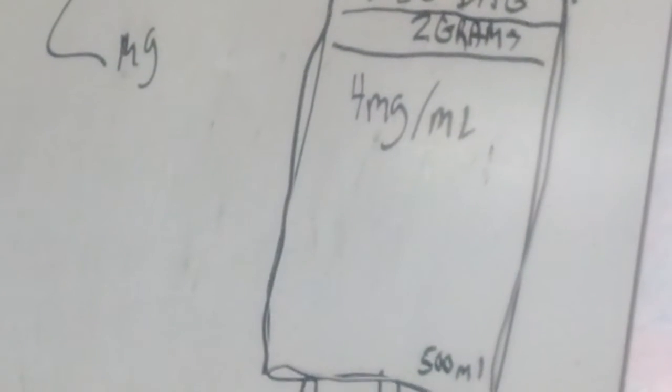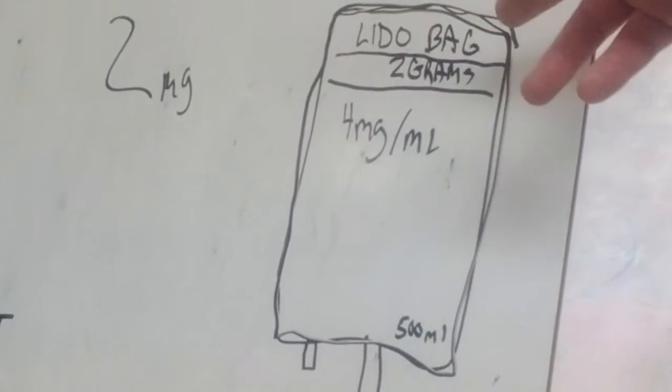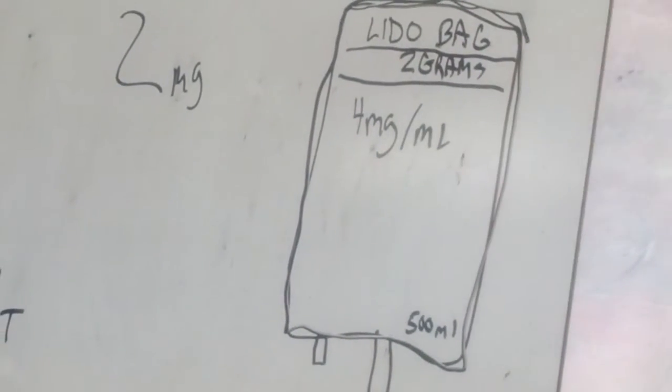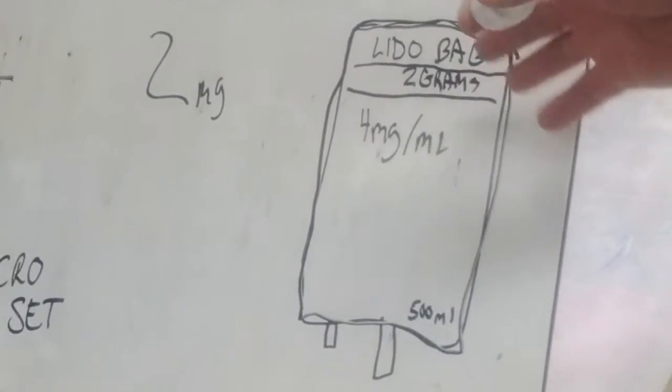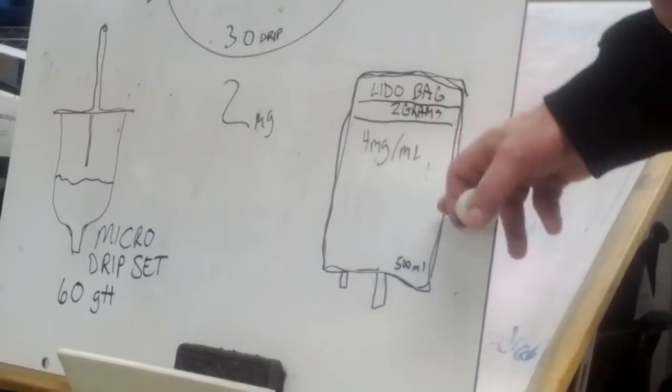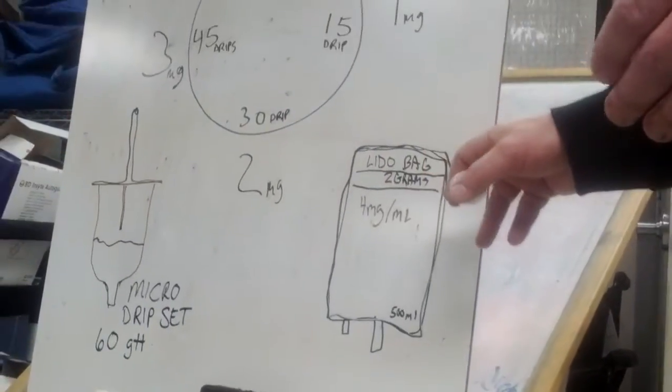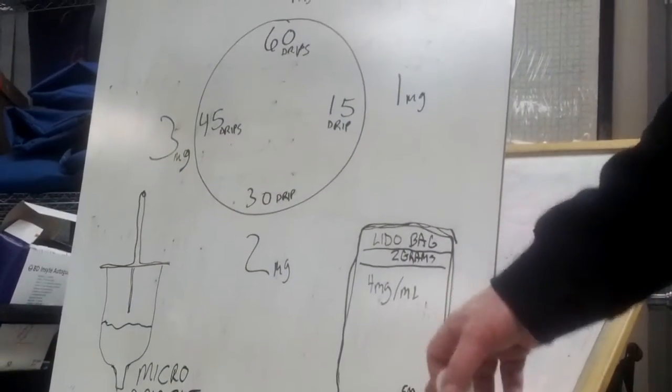It's supposed to be one gram in 250 or two in 500. So if you have two grams in a 500 bag, it's divided in half - so a 250 bag would have one gram and two milligrams per ml.